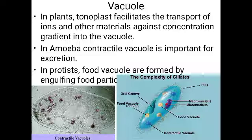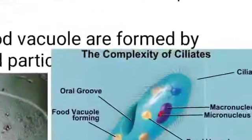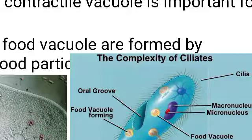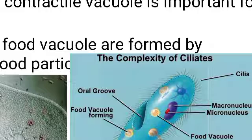In some organisms, food vacuoles are also present, formed by engulfing food particles. In Paramecium, you can see the food vacuole present. This food vacuole is formed due to taking in and engulfing food particles — when a food particle enters, it is surrounded by a membranous structure, forming the food vacuole. That concludes the topic of the endomembrane system.